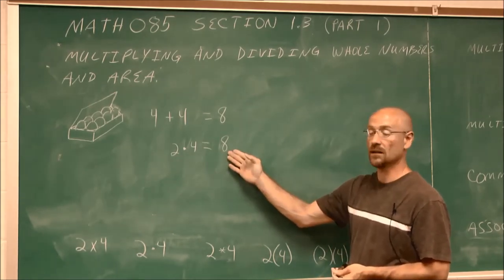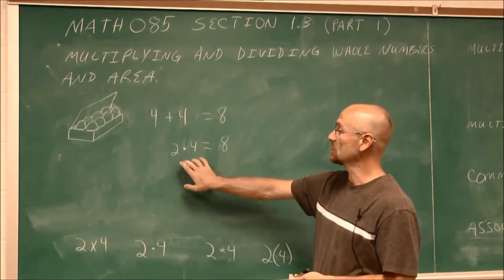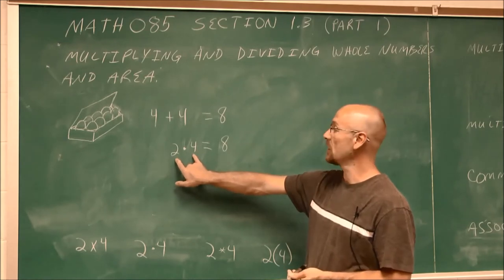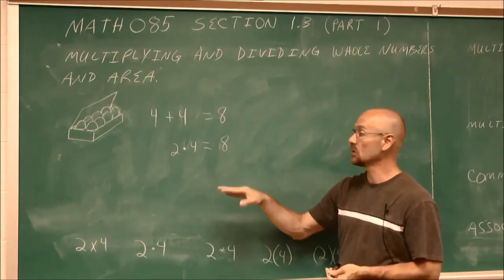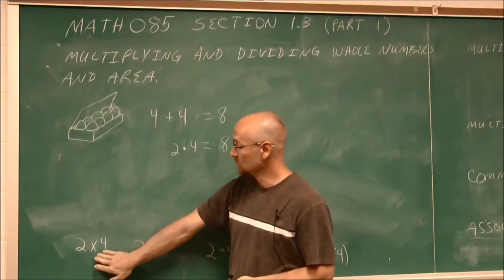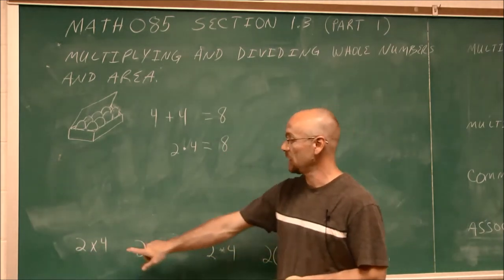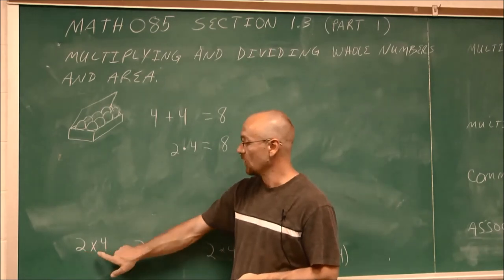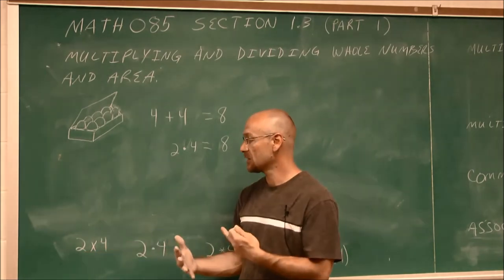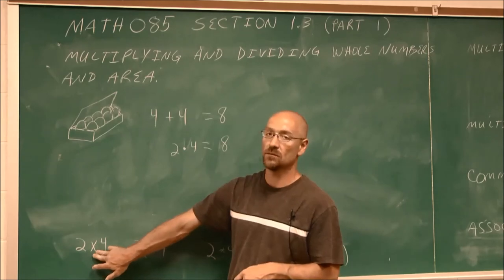This is called the product, and these are called factors. The values that we are multiplying together are factors, and they give us a product. So just to make sure you understand the different representations of multiplication, we have two times four. Sometimes we use this x. As we advance in math, we find that this can be a little confusing, especially when we introduce variables.